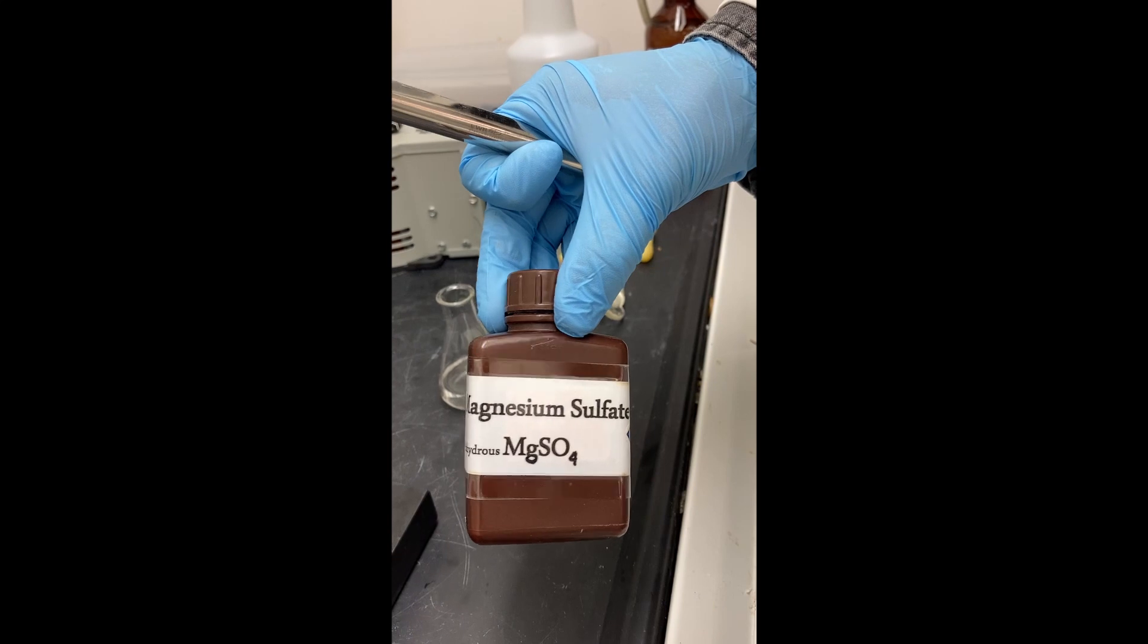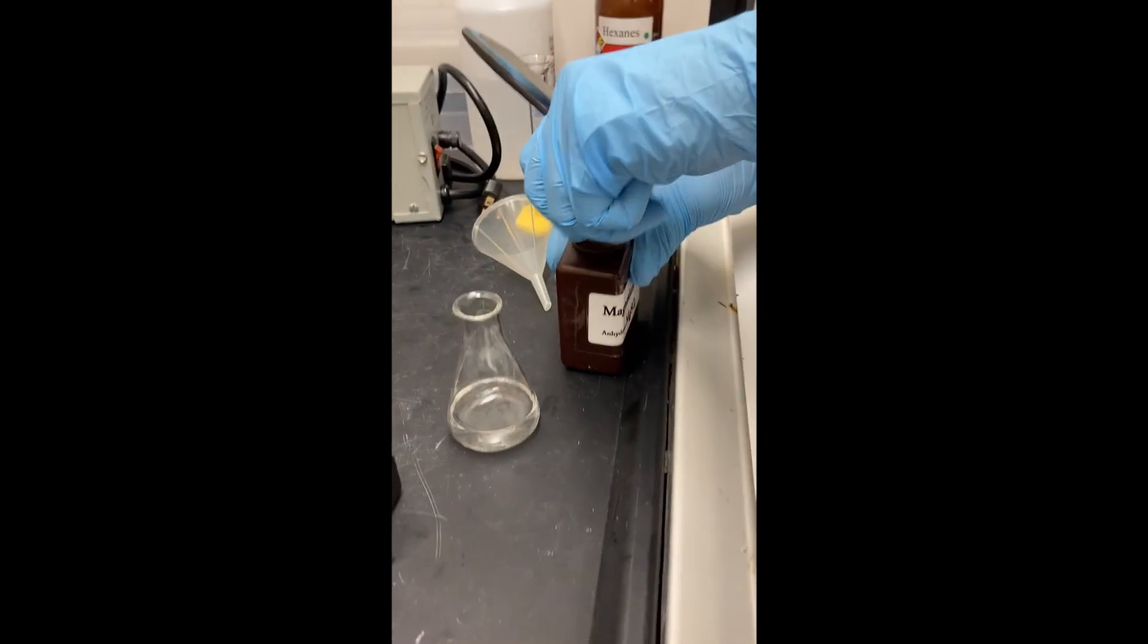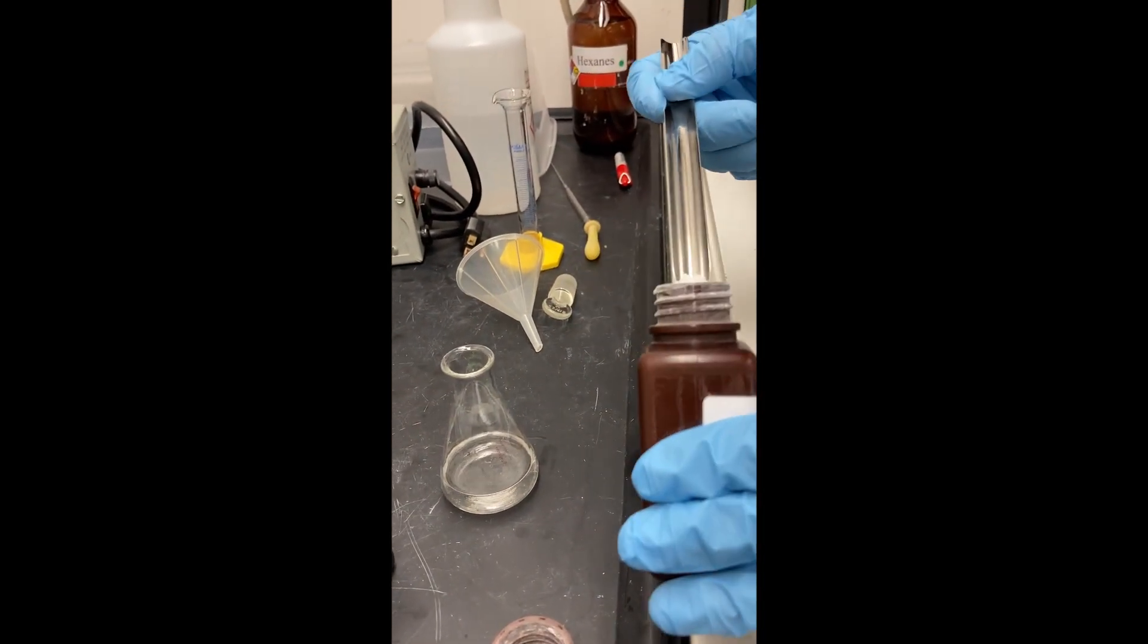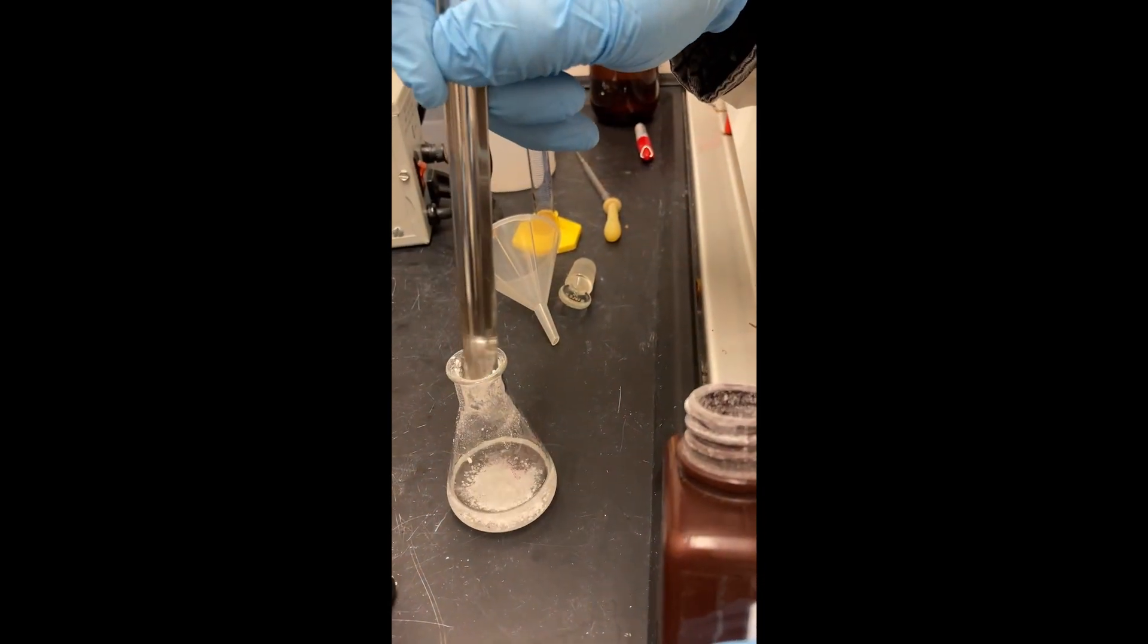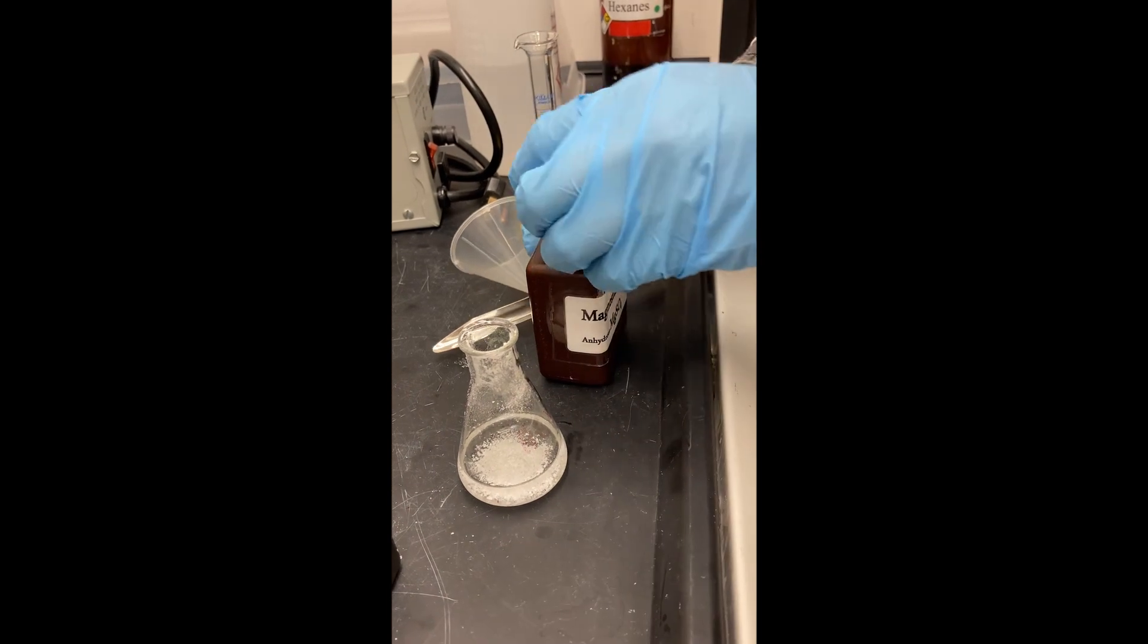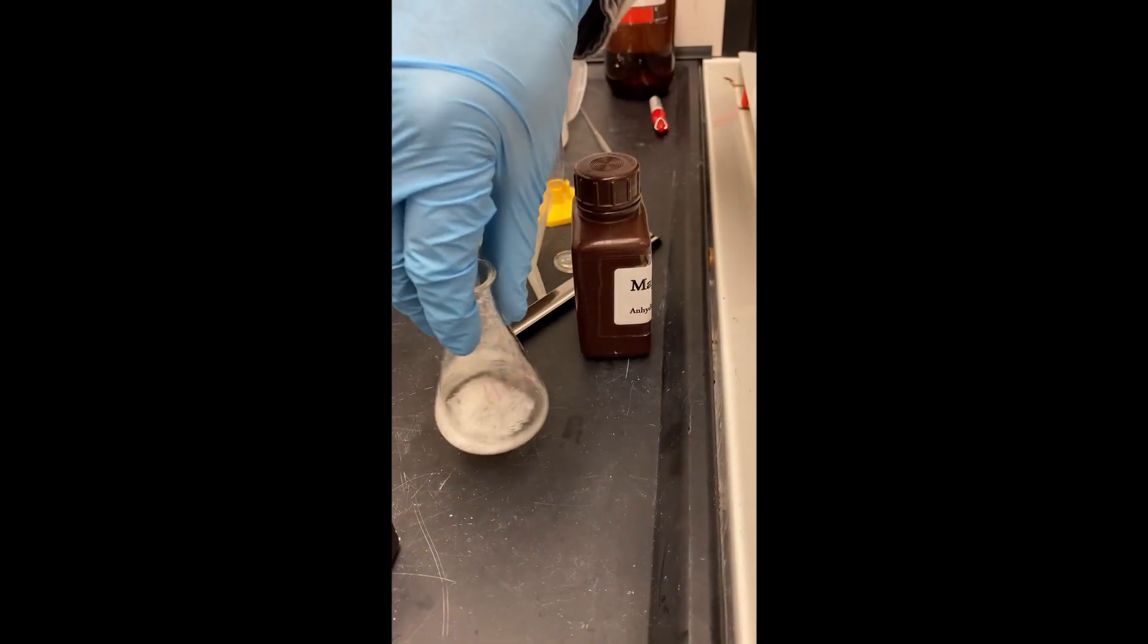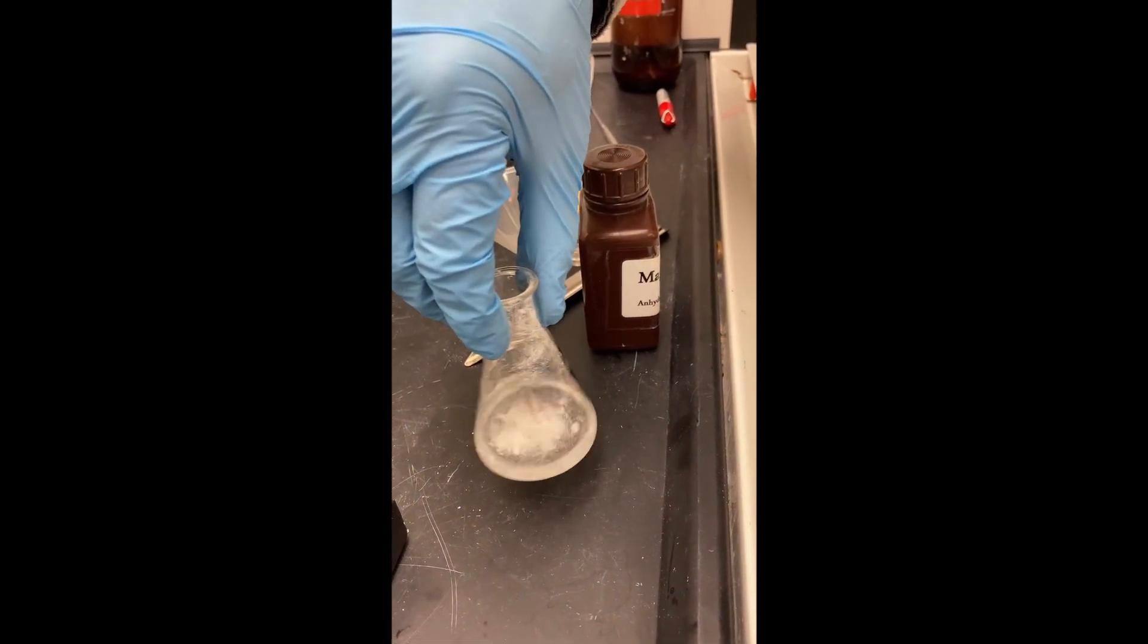Next, we want to remove any residual water from the organic layer using magnesium sulfate. When you swirl it up, if there is excess powdery magnesium sulfate, that's a good indication that it is dry.